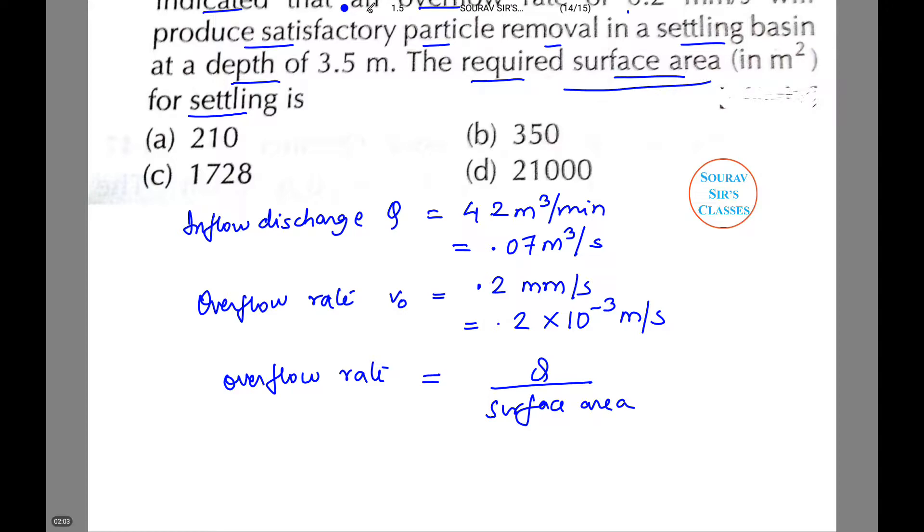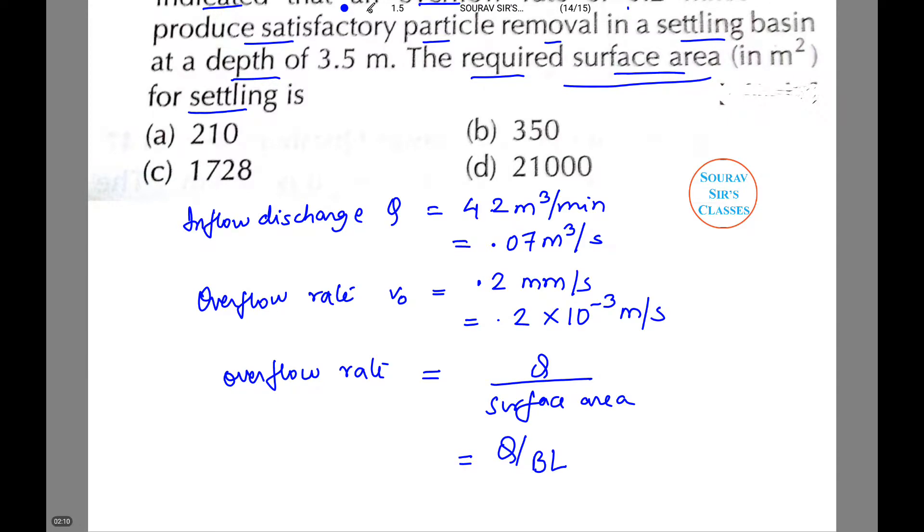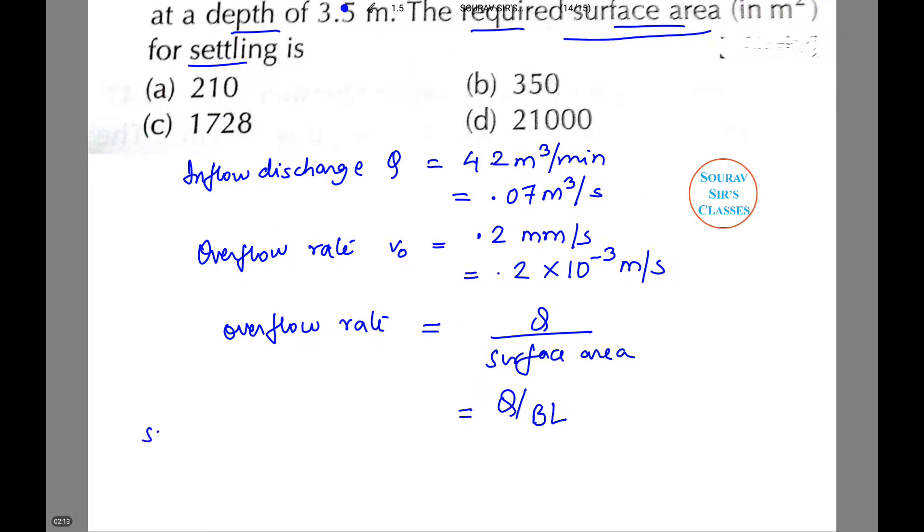So this can be rewritten as Q by B times L. So surface area is equal to Q by V naught.